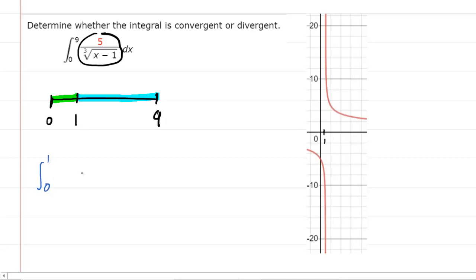It's going to be from 0 to 1. And then our function is 5 over, and we're going to rewrite the cube root as x minus 1 raised to the power of 1 third. And this will be with respect to x.